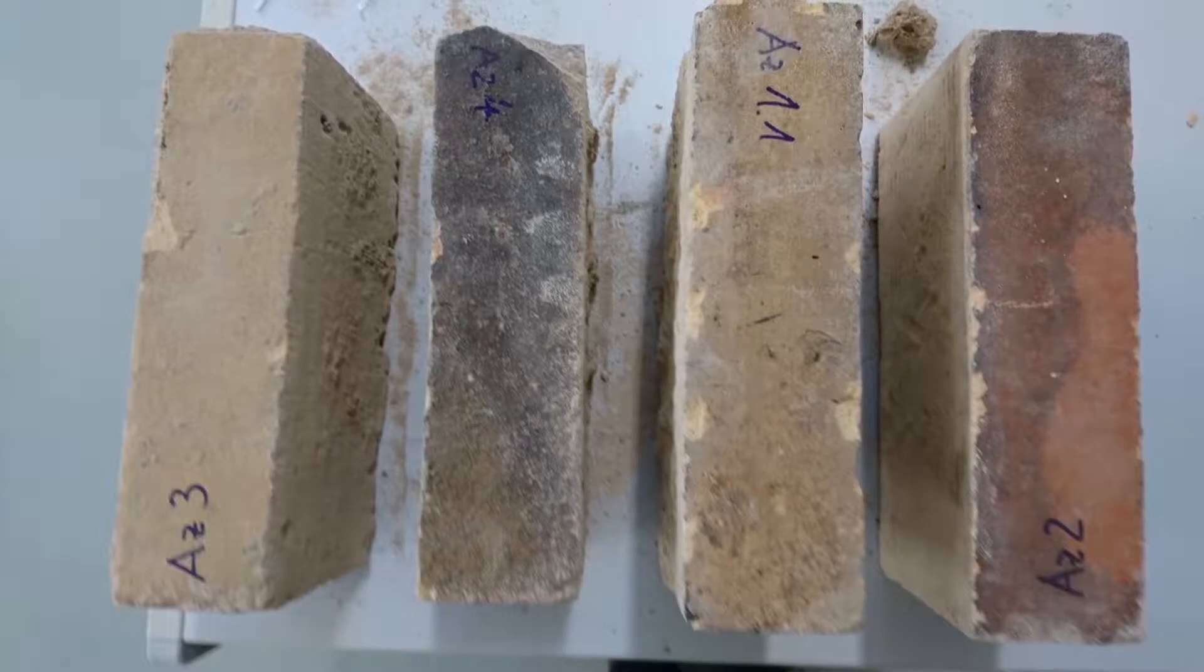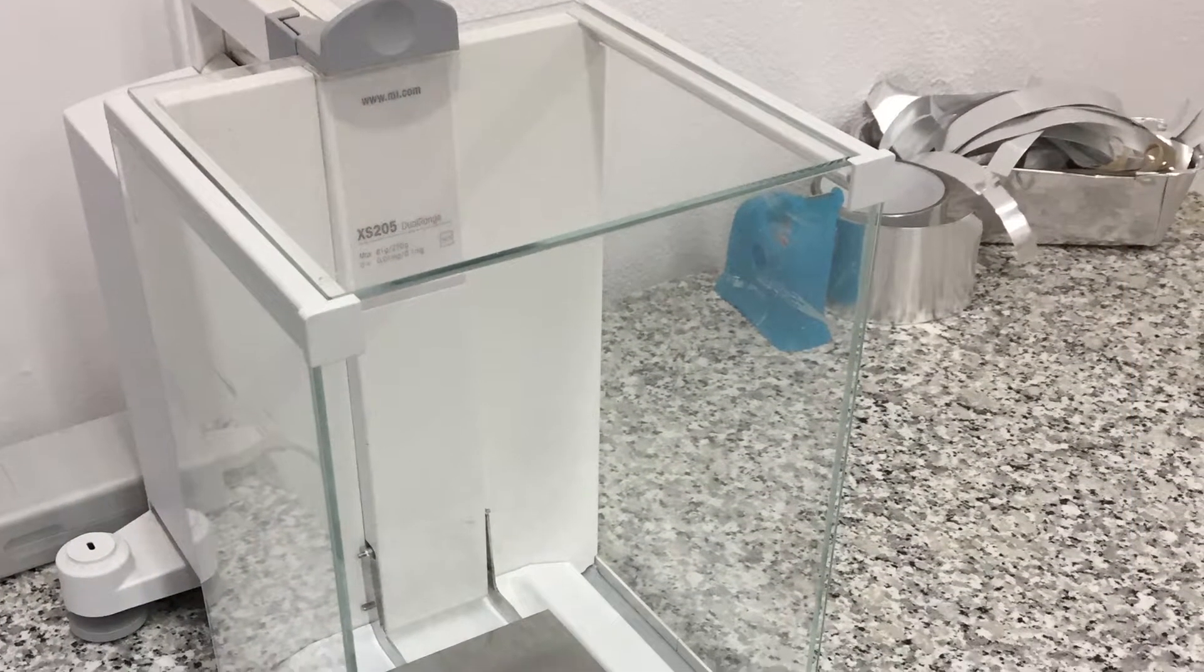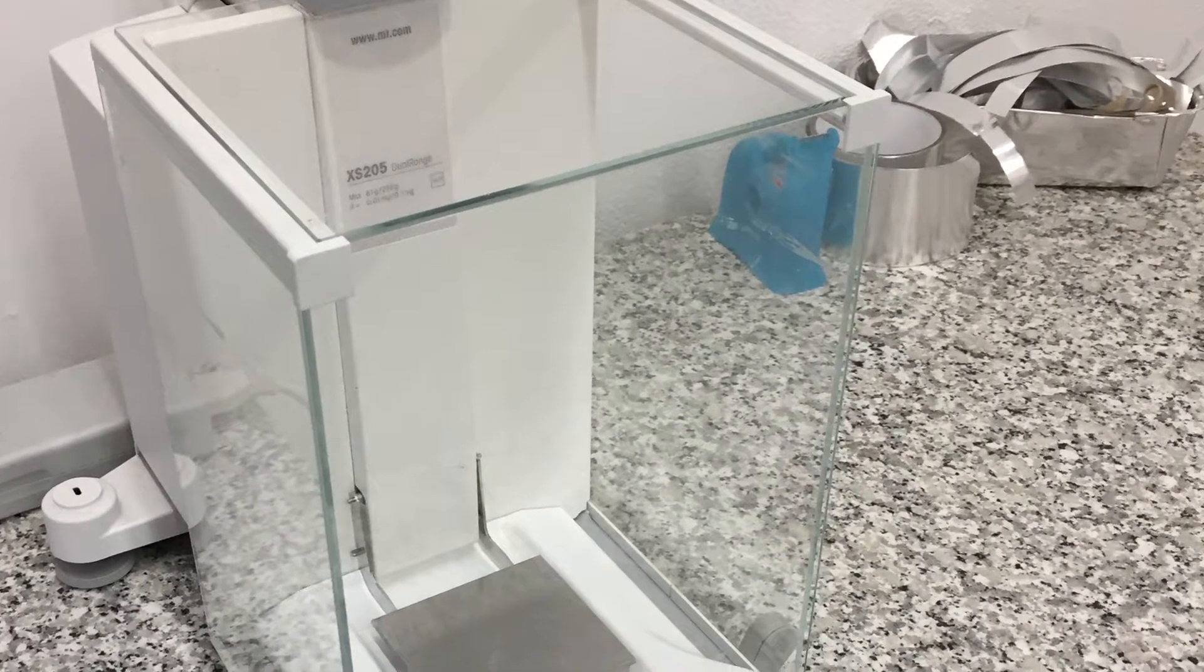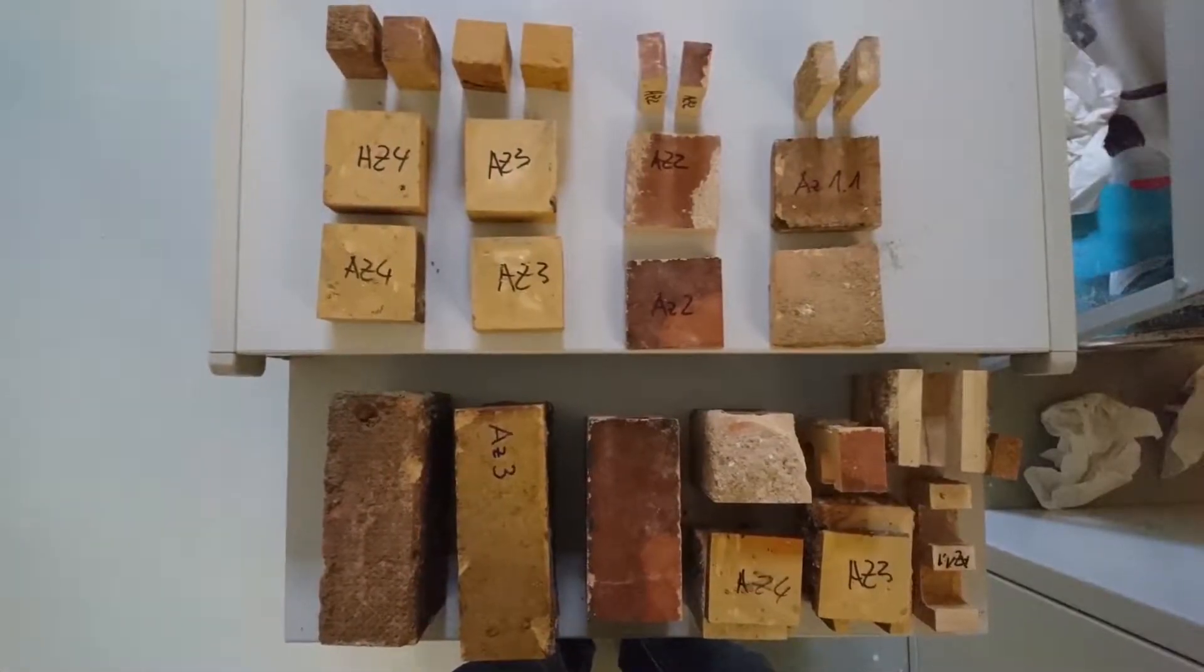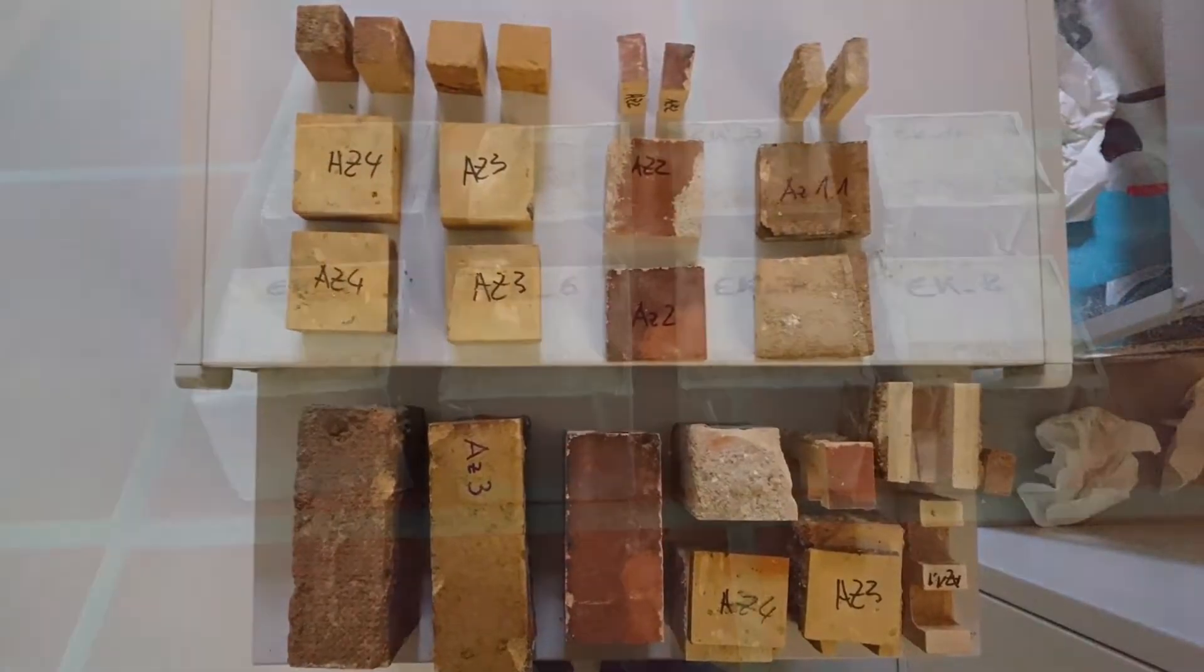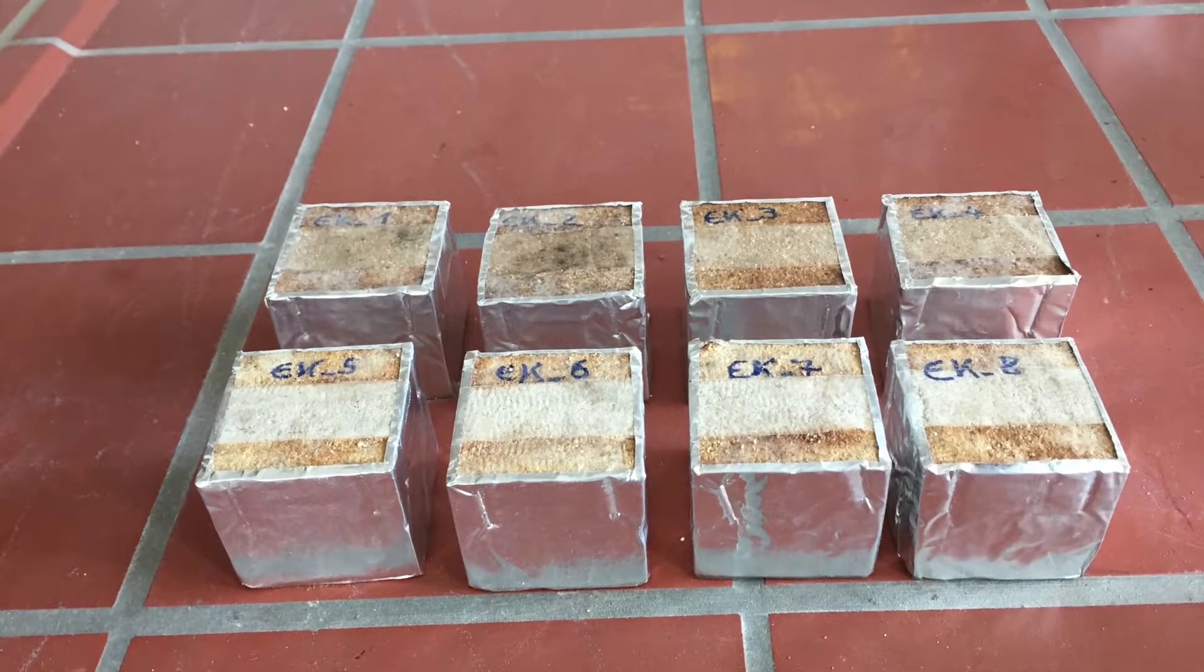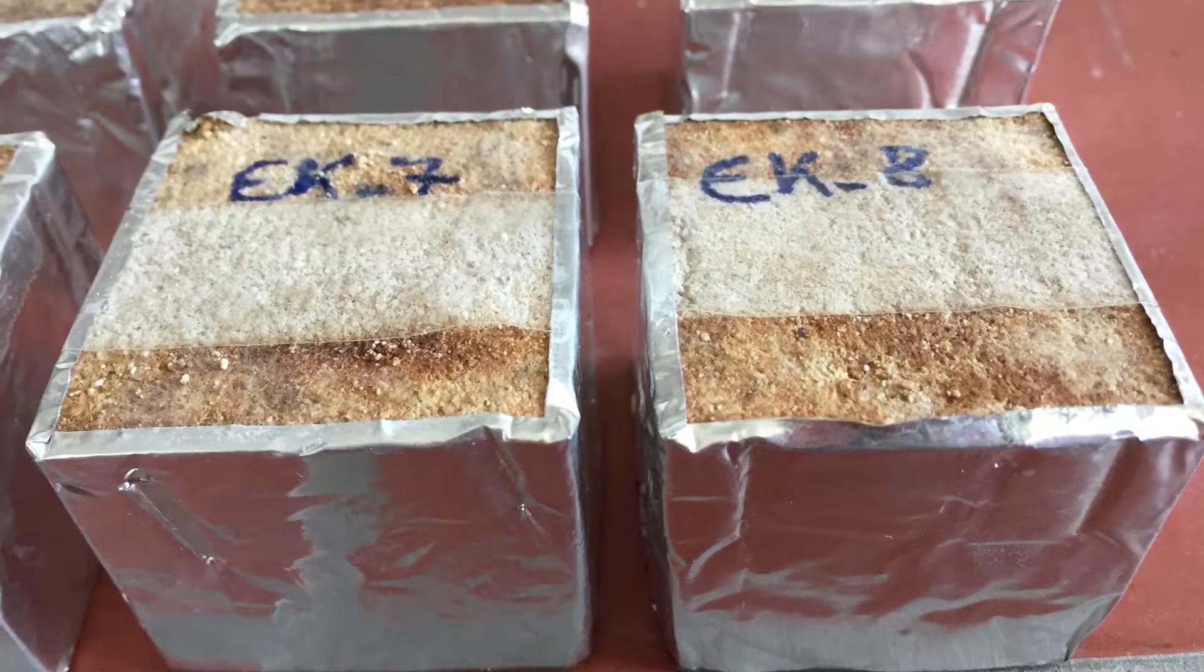When they arrive at the lab, their dimensions and their removal weight are measured. Then the samples are prepared for different measurement methods. Each measurement method requires a specific sample format and a uniform, either dried or saturated initial state.